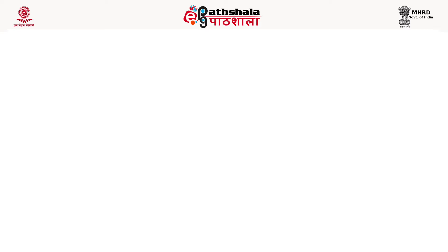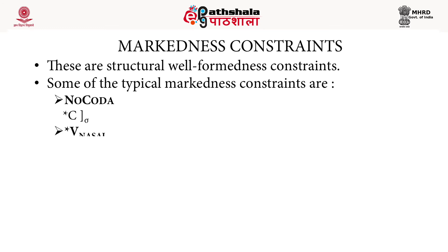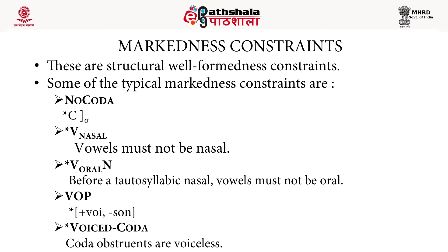Markedness constraints are the structural well-formedness constraints. Some typical markedness constraints include: NO-CODA, which says there should not be a coda in a syllable; NO NASAL VOWELS, written as *V[nasal], meaning vowels must not be nasal; a constraint that an oral vowel before a tautosyllabic nasal must become a nasal vowel; and VOP (Voice Obstruent Prohibition), which says obstruents must be voiceless — no voiced coda.